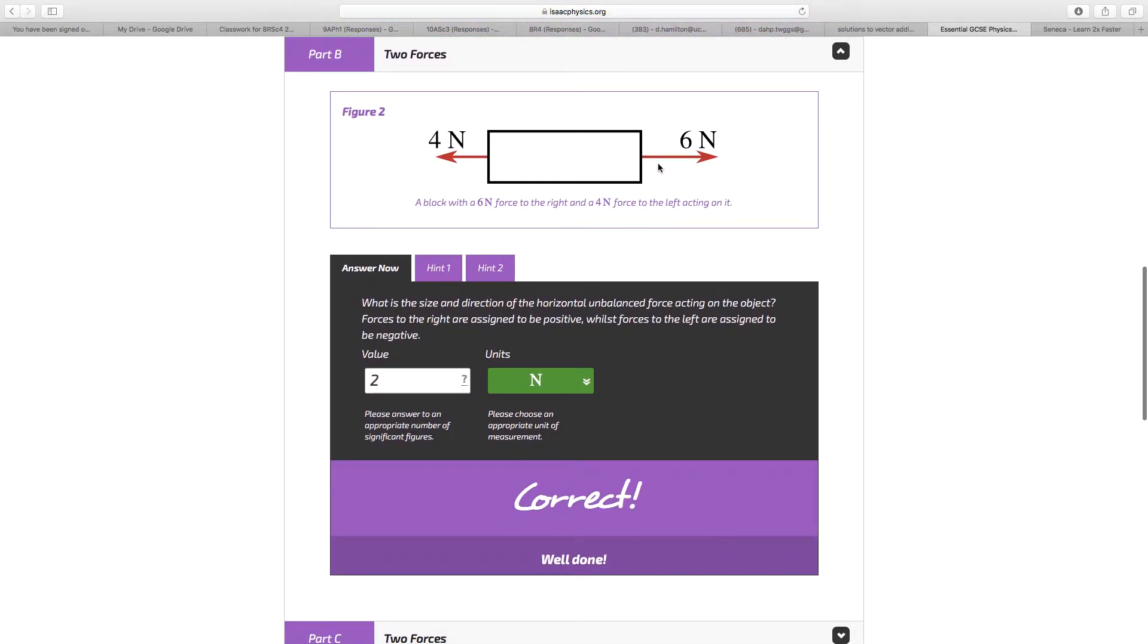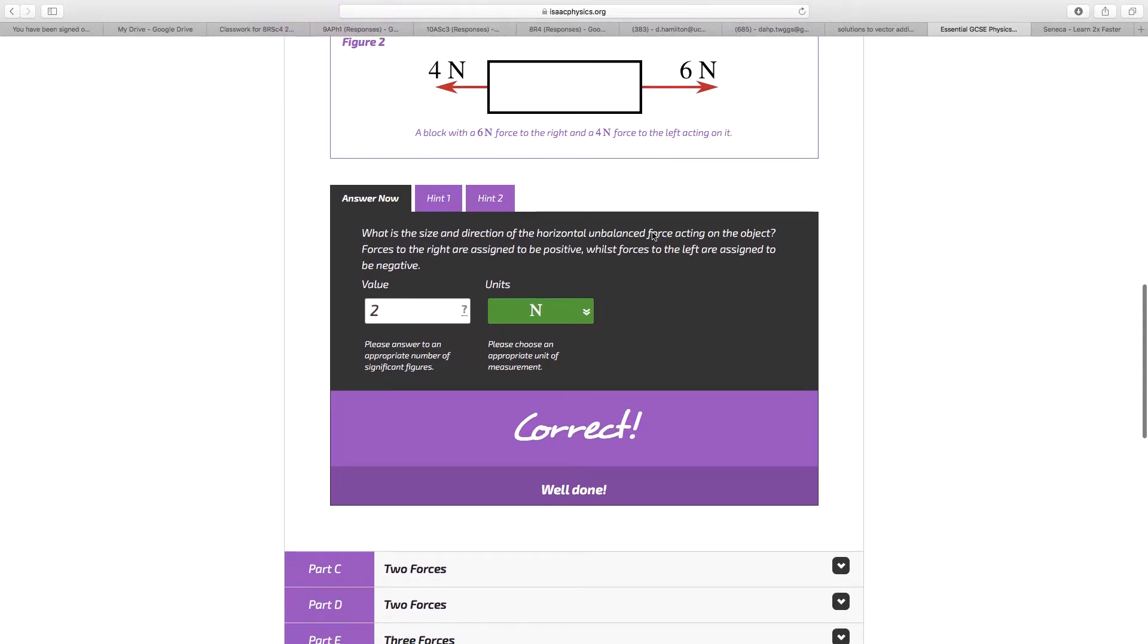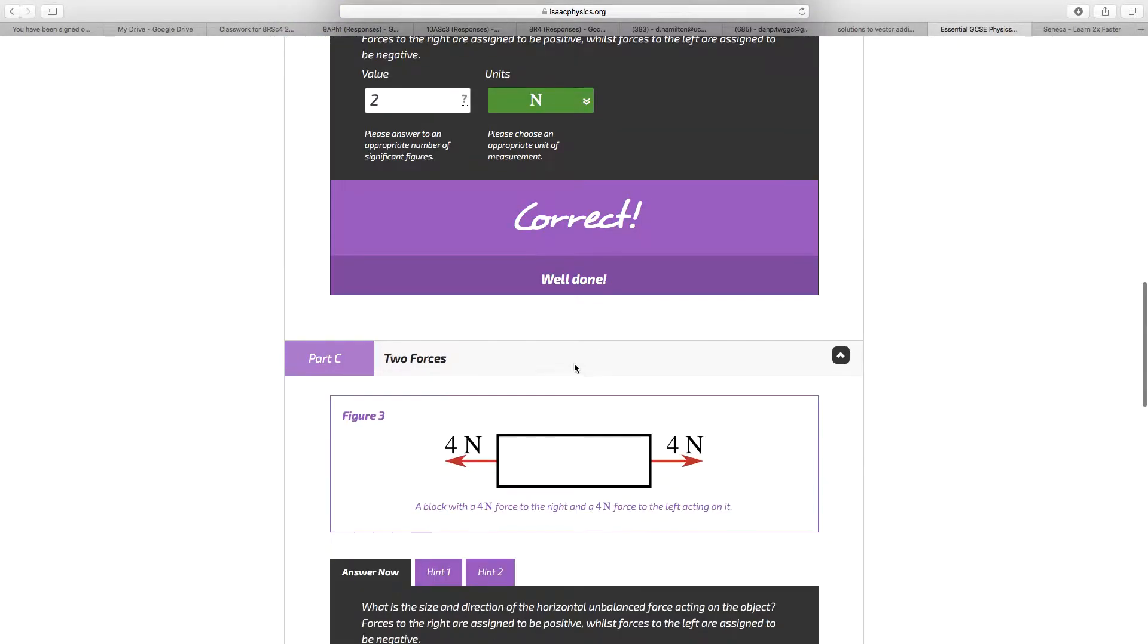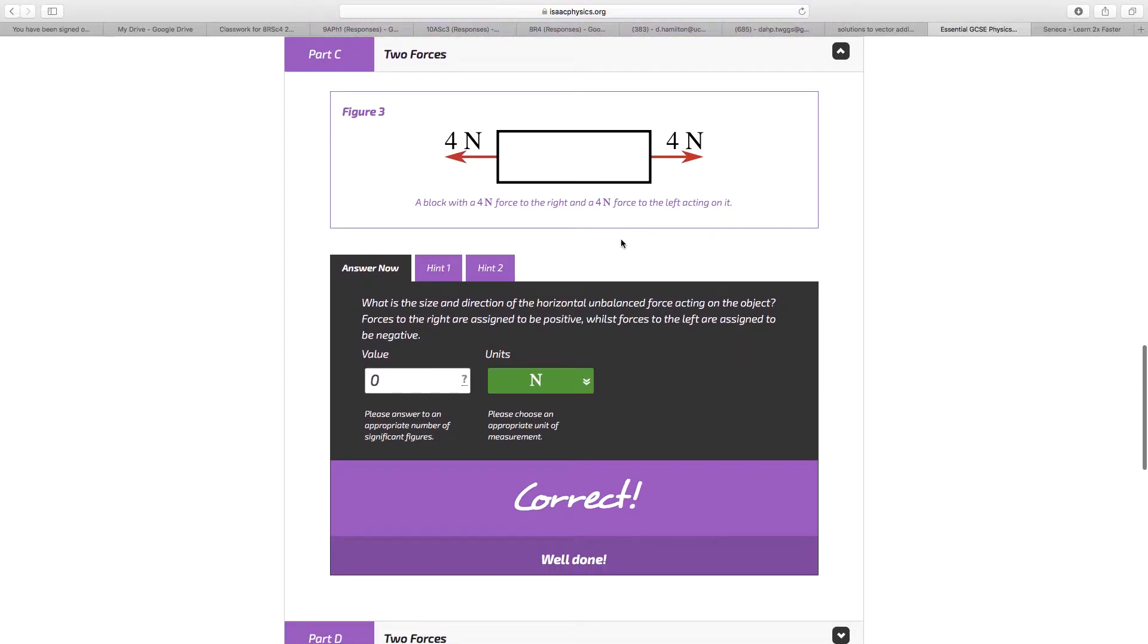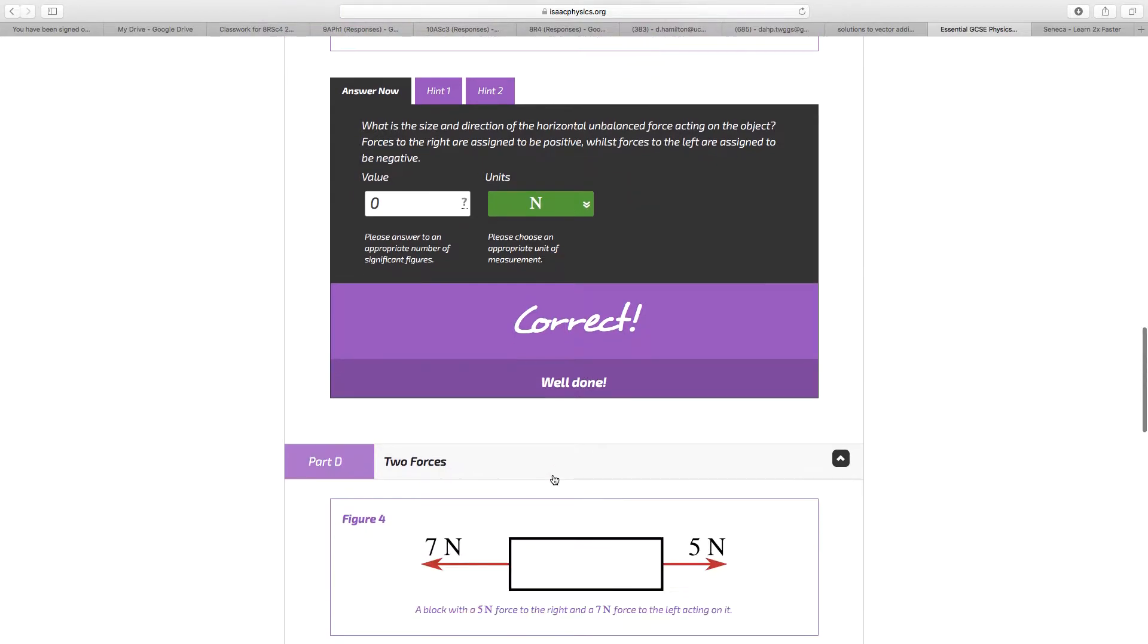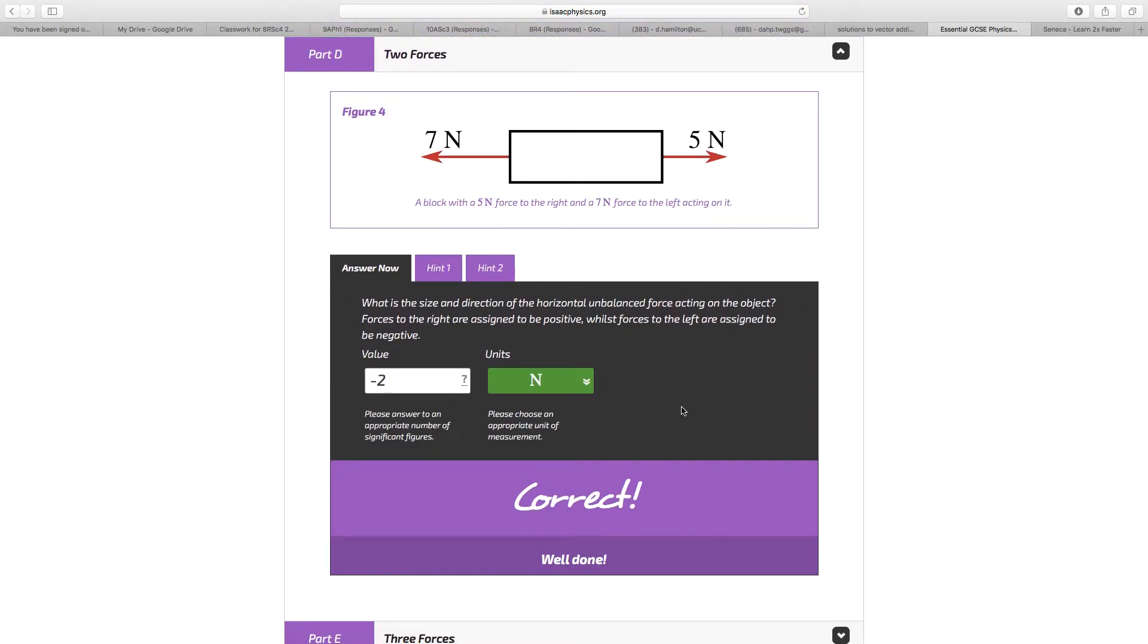Two forces then, we have 6 to the right, 4 to the left, so we've got 2 Newtons. Here we have 4 and 4 in each direction, so the resultant is 0 Newtons. Here we have 5 to the right, 7 to the left, so that's minus 2 Newtons.